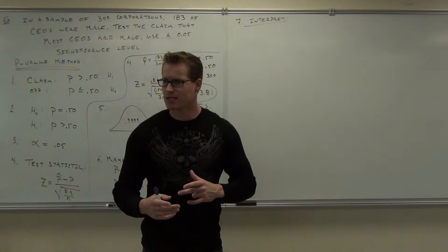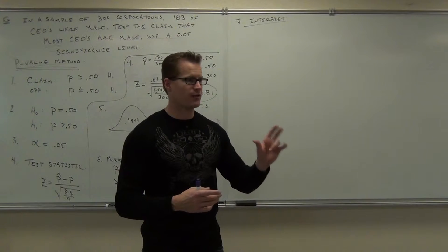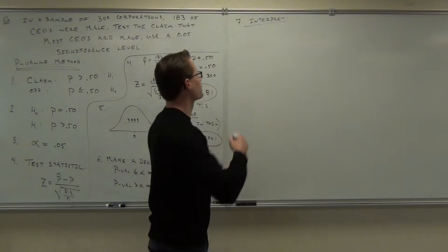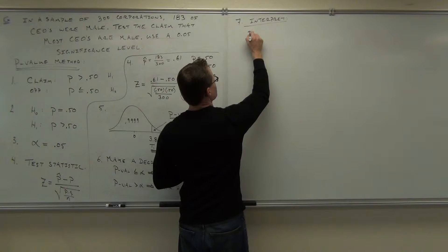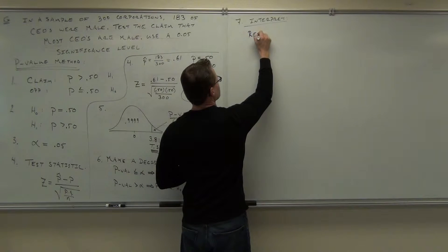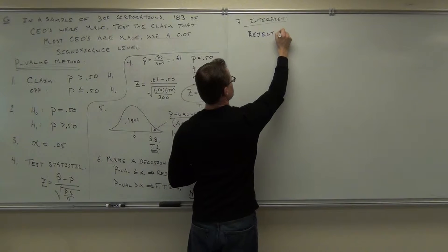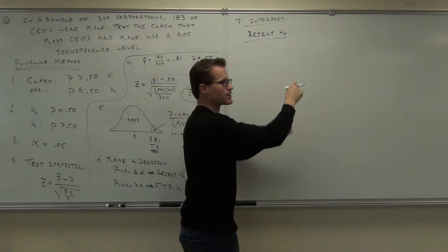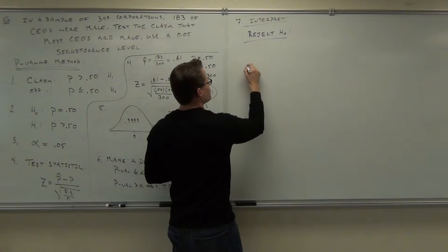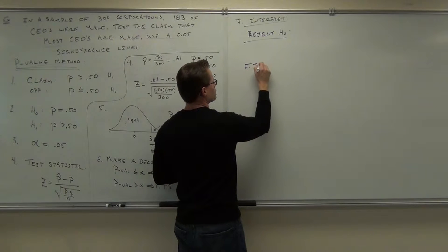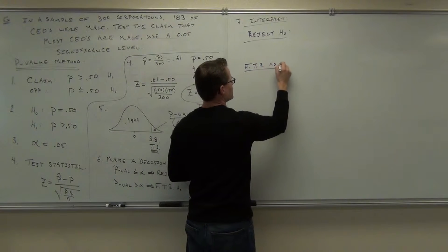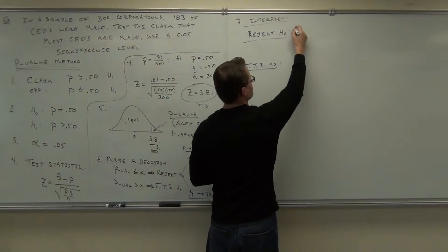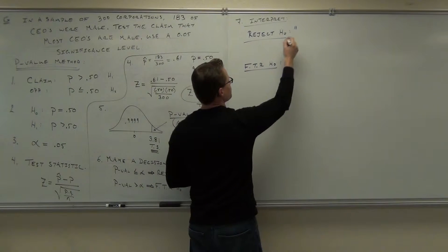If you fail to reject H sub 0, you say there's not enough evidence to support the claim. So it's one of two things: if you reject H sub 0, you write exactly this; if you fail to reject H sub 0, you write exactly this.